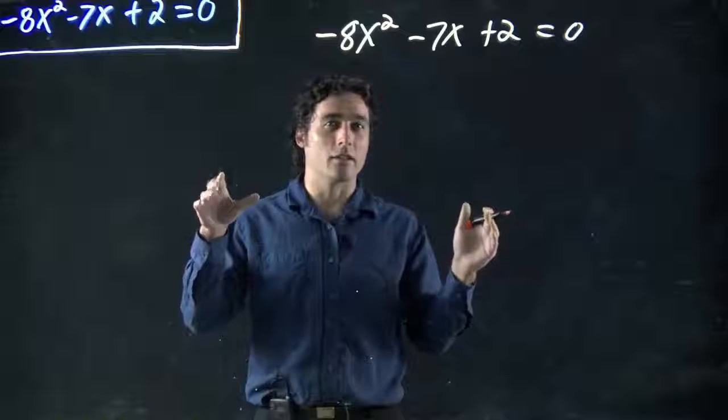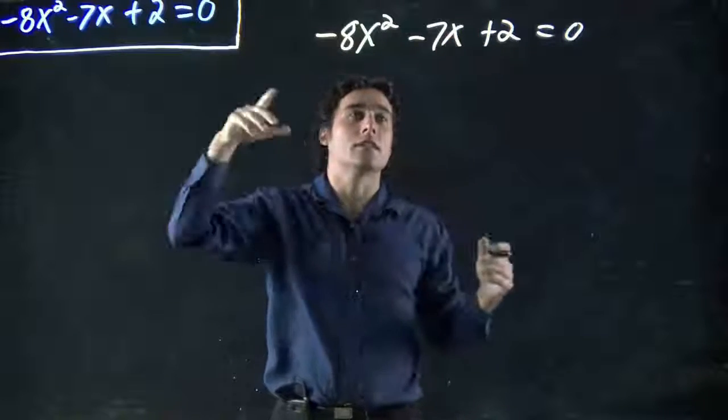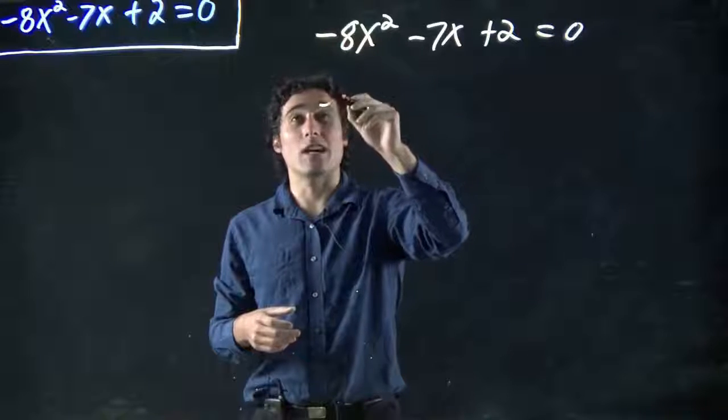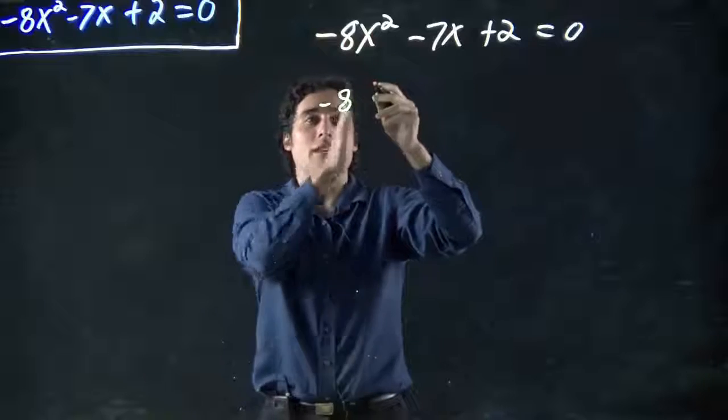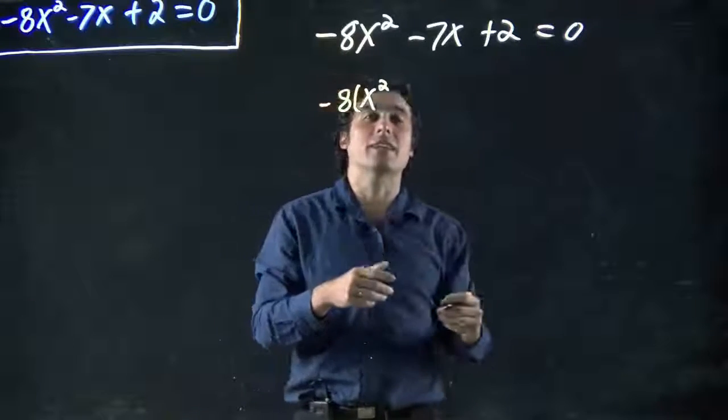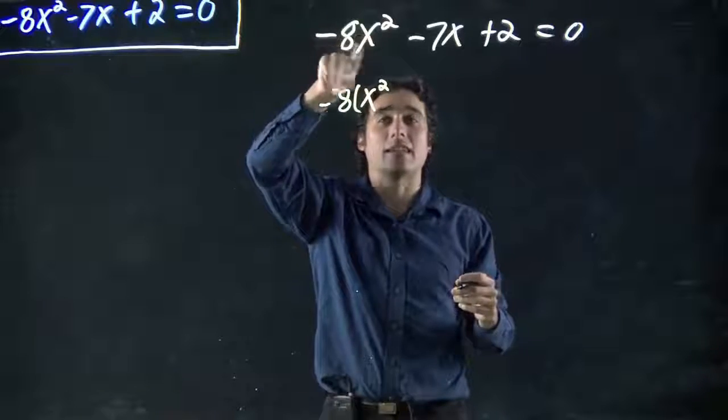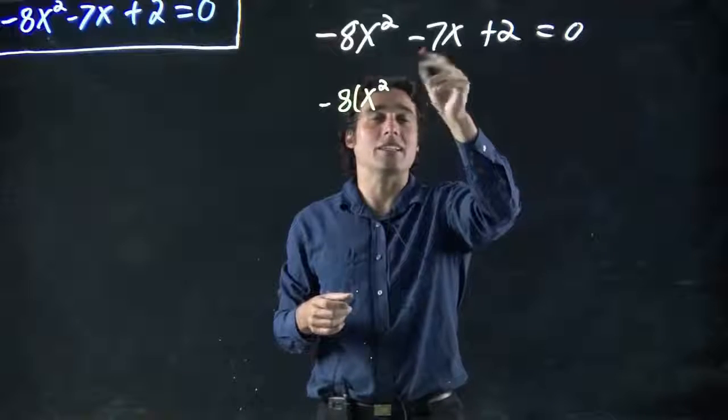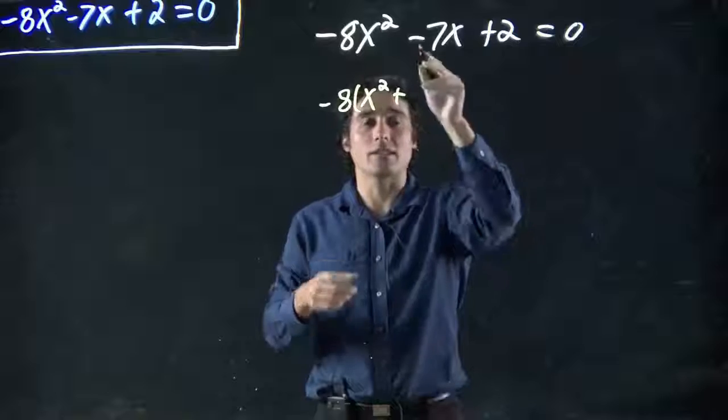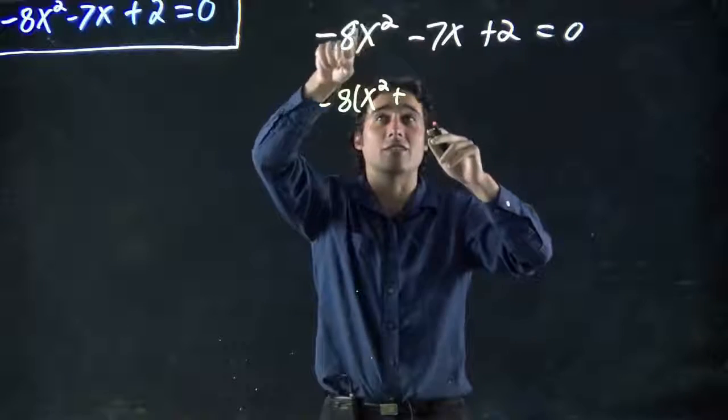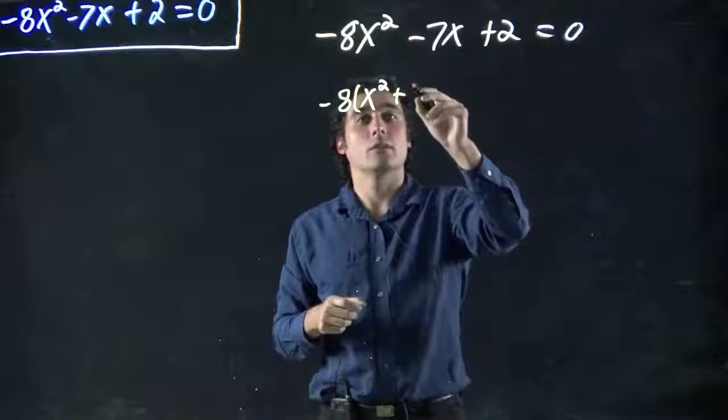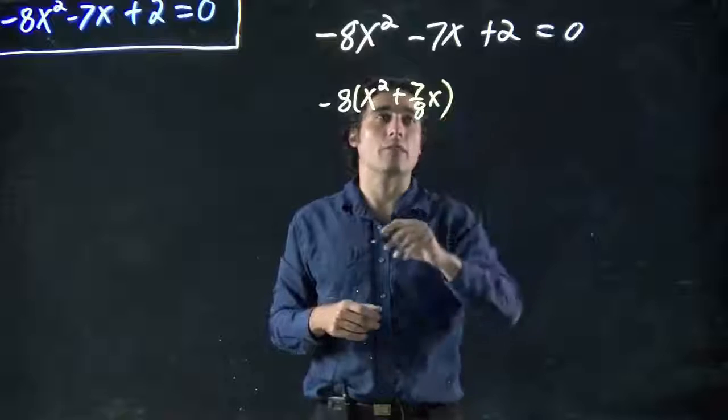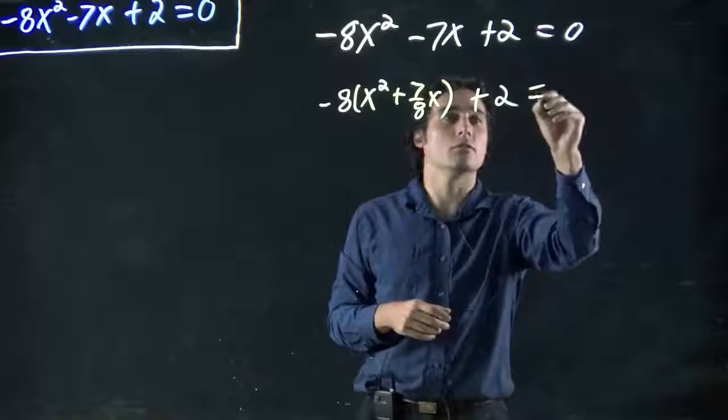Remember, last time we looked at completing the square, we focused on these two terms, the first two terms. This is not a perfect square. We're going to make it into one. We want to focus on this term right here. And what we're going to actually do is take out the minus 8. We want it to be in the brackets just x squared. So we're factoring out a minus 8. Remember what that means? I divide all the terms in brackets by minus 8. So minus 8x squared divided by minus 8 is x squared. But minus 7x divided by minus 8, the minuses will cancel. Remember when you factor out a negative, all the signs change. We basically get 7 over 8x. And this plus 2, we can just leave it out here.